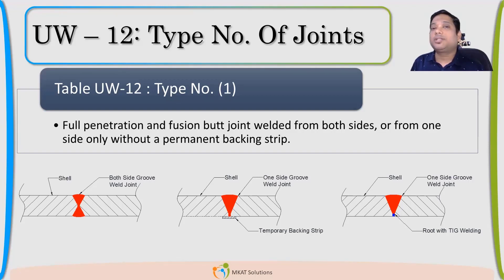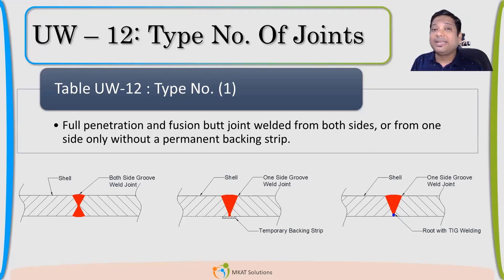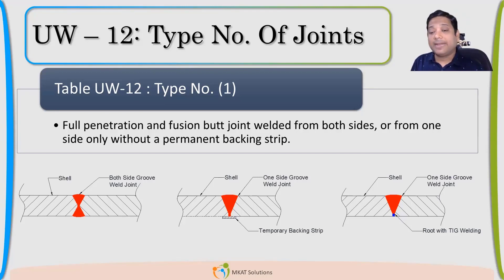How do we achieve full penetration? We can have a double V, both-side welding. We weld from one side, then chip back and grind from the other side to remove unpenetrated or lack-of-fusion material. We do PT to ensure all lack-of-penetration area has been removed, then weld again from the other side, ensuring the root is completely fused.